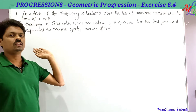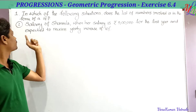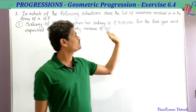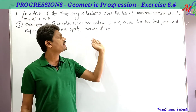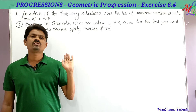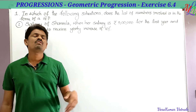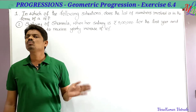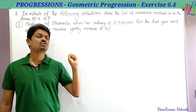In the first problem there are three parts. The first part: the salary of Sharmila, when her salary is rupees 5 lakh for the first year and is expected to receive a yearly increase of 10 percent. We have to find whether the list of numbers involved in the given situation forms a geometric progression or not.